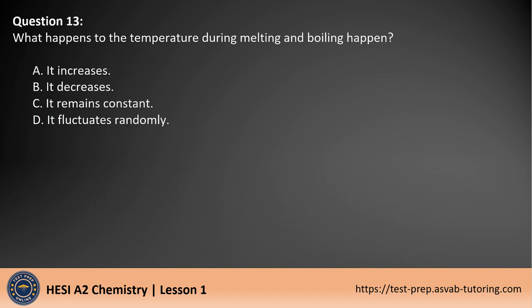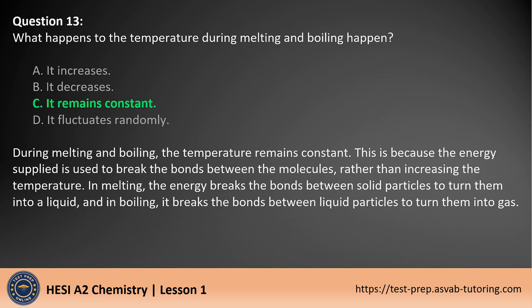Question 13. What happens to the temperature during melting and boiling? A. It increases. B. It decreases. C. It remains constant. D. It fluctuates randomly. The answer is C. During melting and boiling, the temperature remains constant. This is because the energy supplied is used to break the bonds between the molecules rather than increasing the temperature. In melting, the energy breaks the bonds between solid particles to turn them into a liquid, and in boiling, it breaks the bonds between liquid particles to turn them into gas.